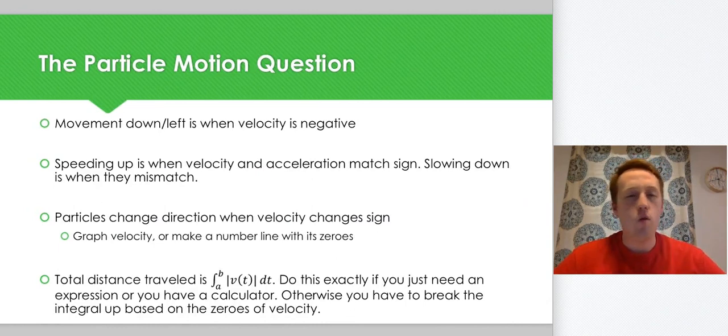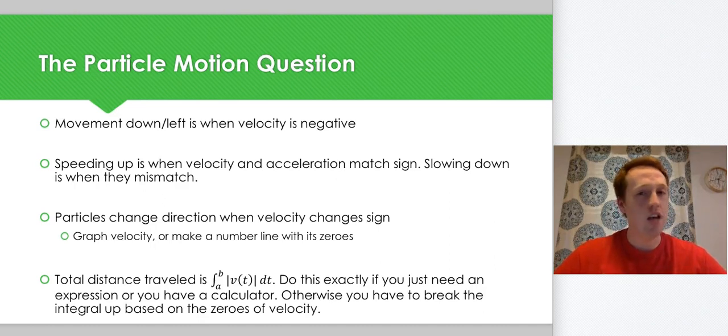Movement down or left depending on context is just when velocity is negative, so we get direction from velocity. Speeding up is when velocity and acceleration match sign, slowing down is when they mismatch.